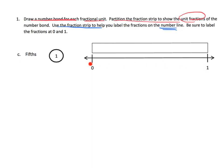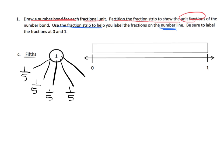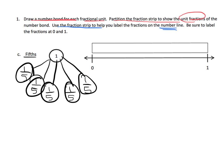We're going to connect these two at first so that our third graders can get used to the tape diagram and then relate it to the number line. Ultimately, students will be able to go straight to the number line. First, we'll draw the number bond — if we want fifths, that means we're going to have one, two, three, four, five. And to partition our fraction strip, we need to cut it into five equal-sized pieces.